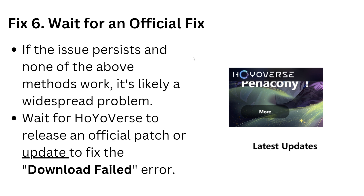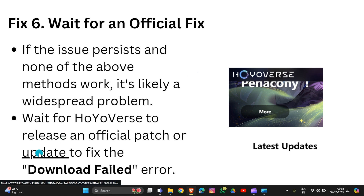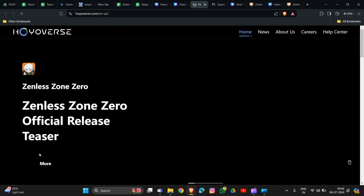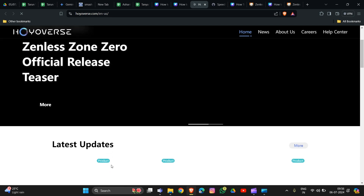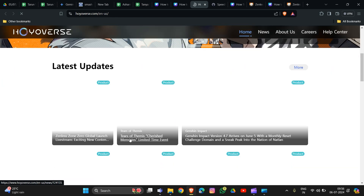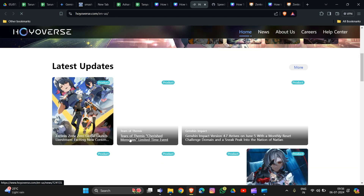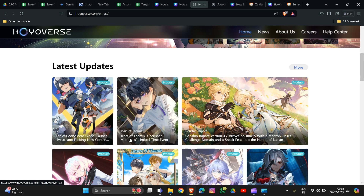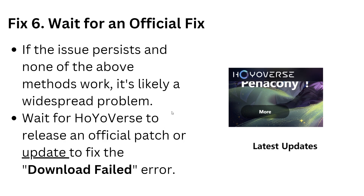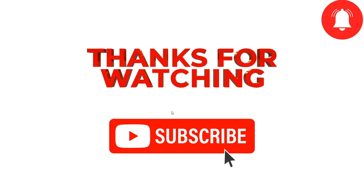Fix 6: wait for an official fix. If the issue persists and none of the above methods work, it is likely a widespread problem. Wait for the developers to release an official patch or update to fix the downloading error. You can check their official channel — the link is provided — where they announce information about the latest updates and ongoing issues.